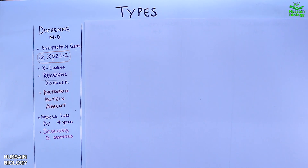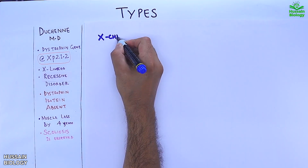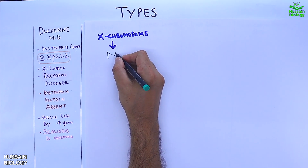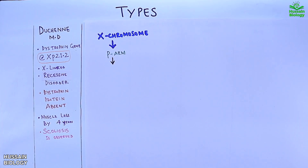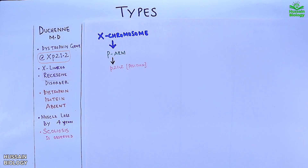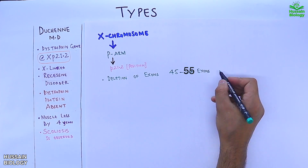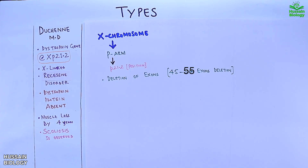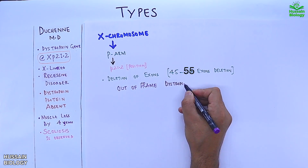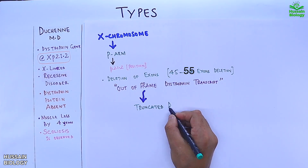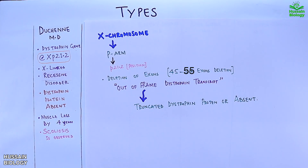Regarding the mutation: this is an X-linked mutation found on the p-arm of chromosome X at position 21.2. The dystrophin gene has 79 exons, and among these, there is a deletion of exons 45 to 55. This leads to an out-of-frame dystrophin transcript, which gives rise to a truncated dystrophin protein or, in some cases, complete absence of the protein.